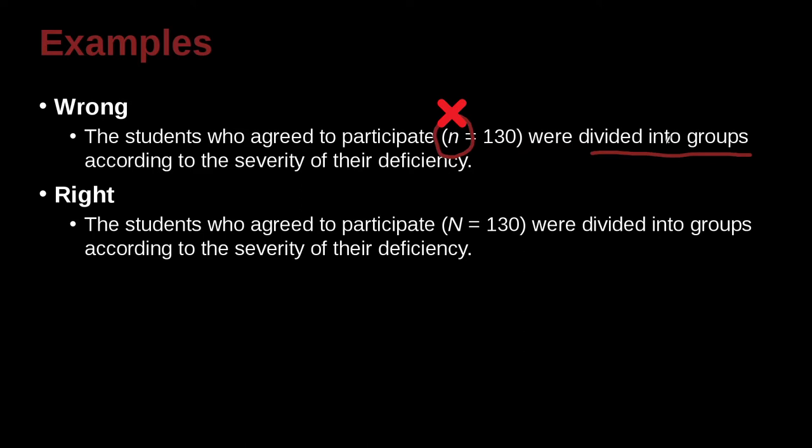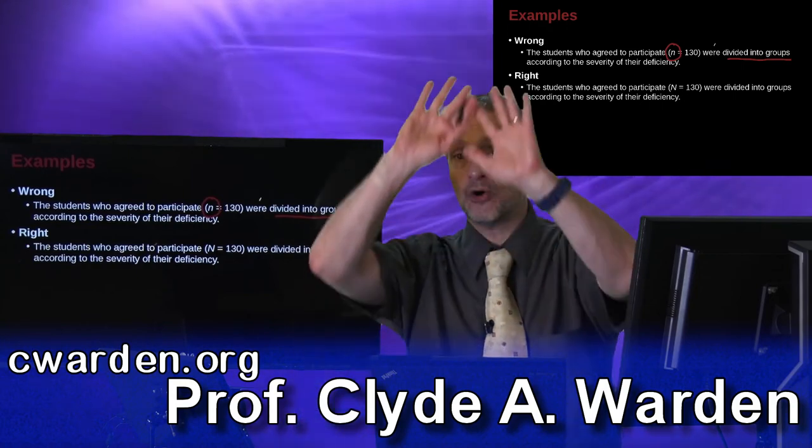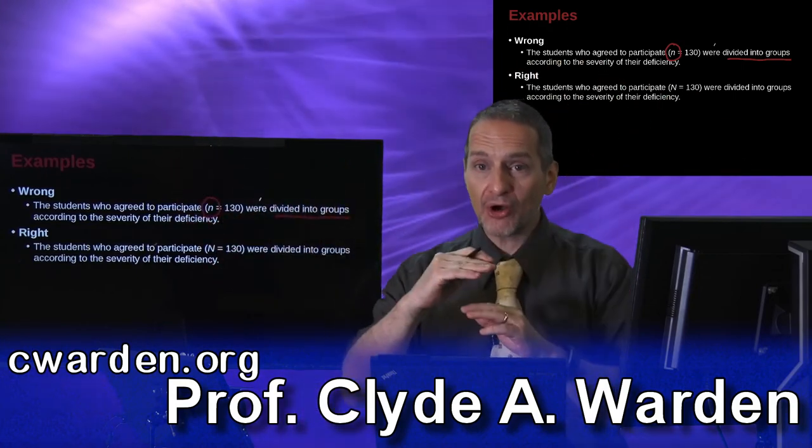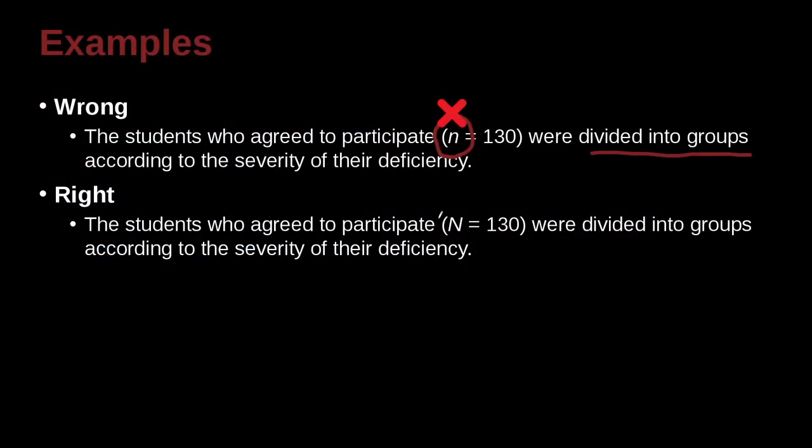But that's not possible because N, big N, capital N, is the total sample. Small N is the sub-sample. So the better way to write this would be that the capital N, the total sample, was 130, and then we divided them into groups. That makes more sense. Now later, those groups may be smaller groups, and one group may be equal to 100, and another group may be equal to 30, thus the total of 130.